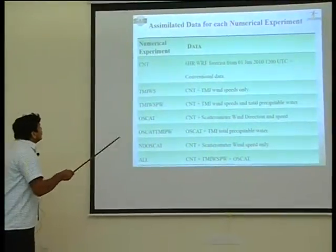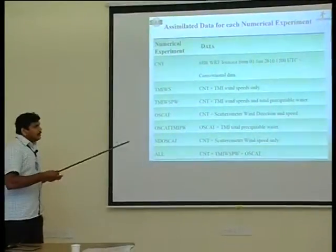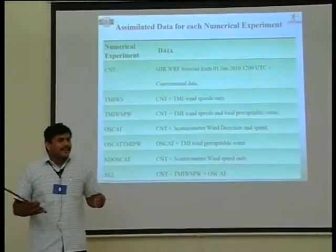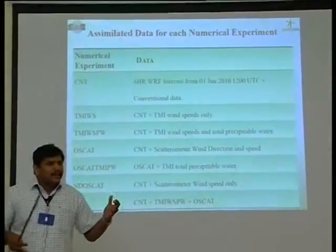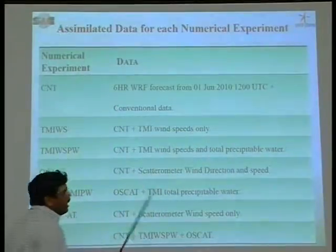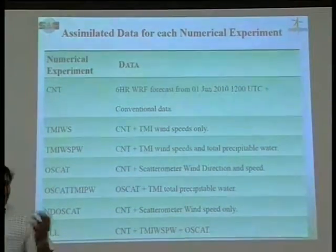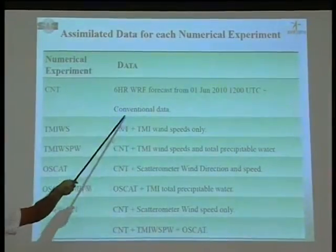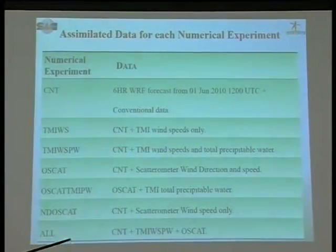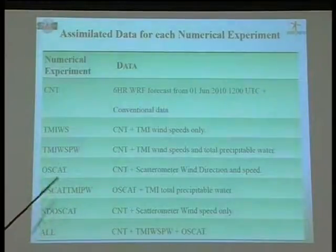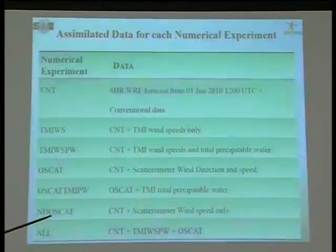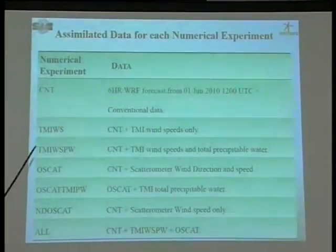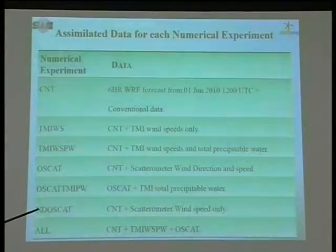For this test case, instead of directly taking the NCEP analysis as the first guess, I use the 6-hour forecast from 12 GMT. In addition to the GFS forecast, I also use some conventional data, mainly surface observations, along with a combination of TMI wind speed, precipitable water, and OSCAT wind. A total of seven different experiments are performed.